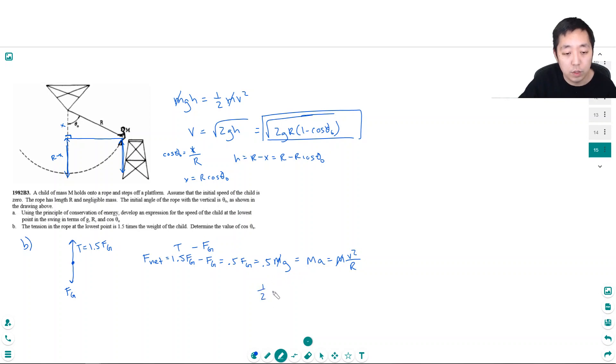So I'm going to write this 1.5 G is equal to v squared over r. V squared is this squared, so I just get rid of the square root. It's 2G r times 1 minus cosine theta not, divided by r. And so the r is canceling. Interesting, the r cancels. So I have, distributing, this is 2G minus 2G cosine theta not.